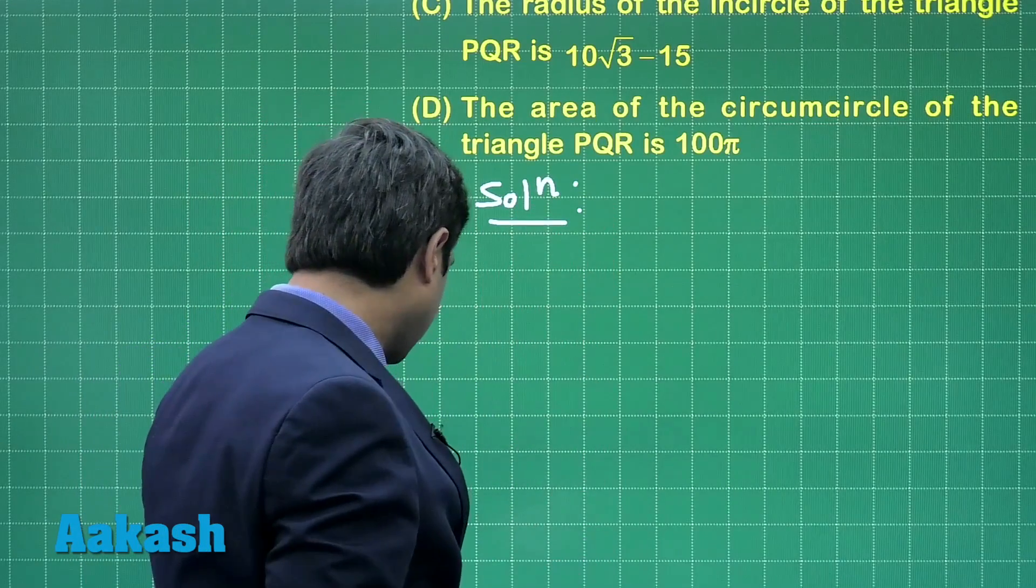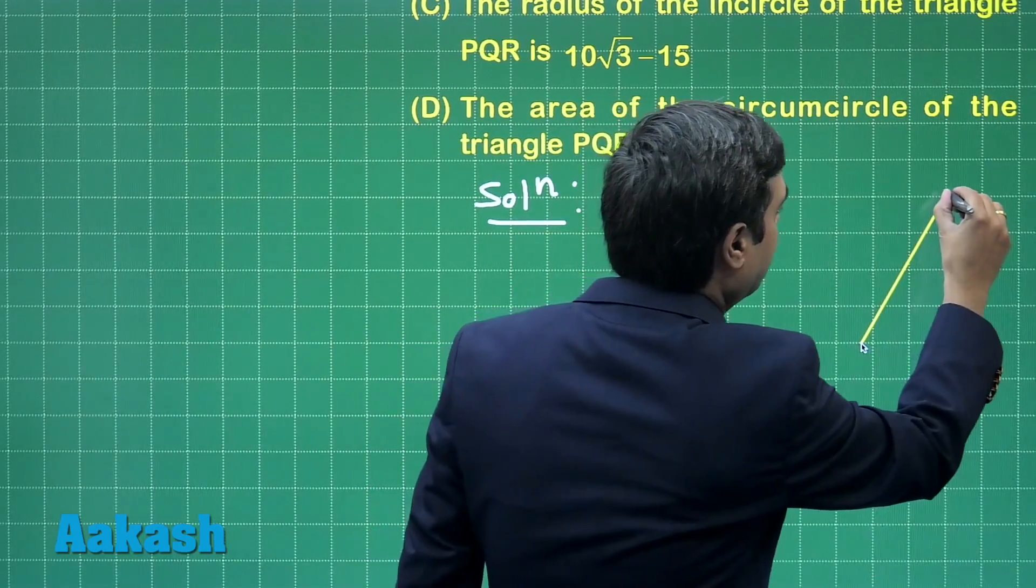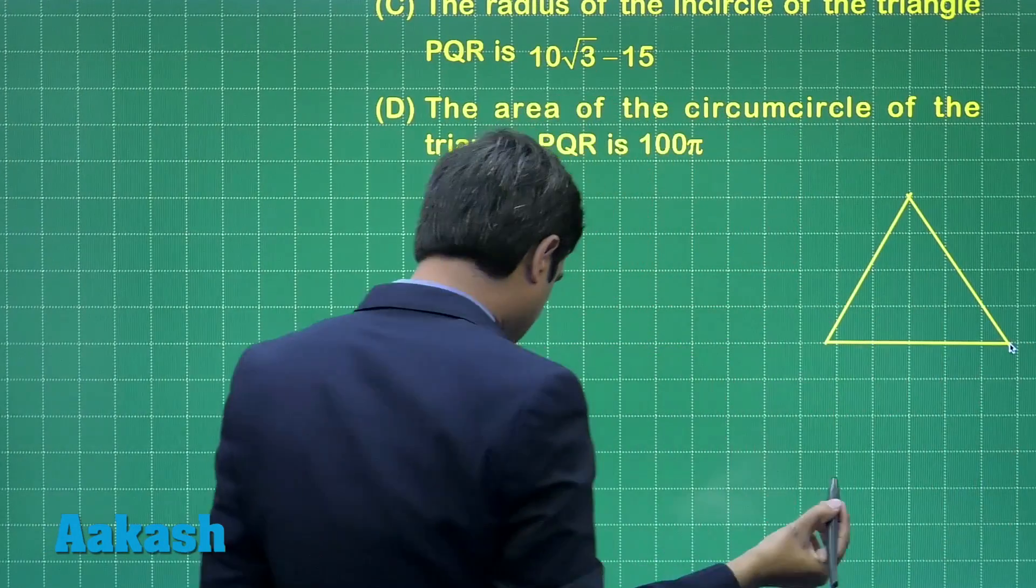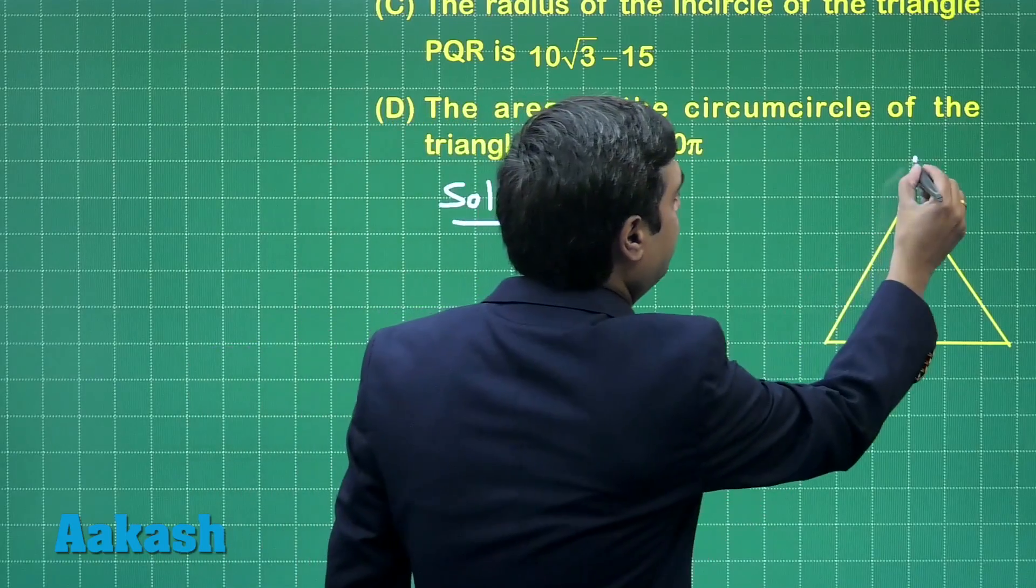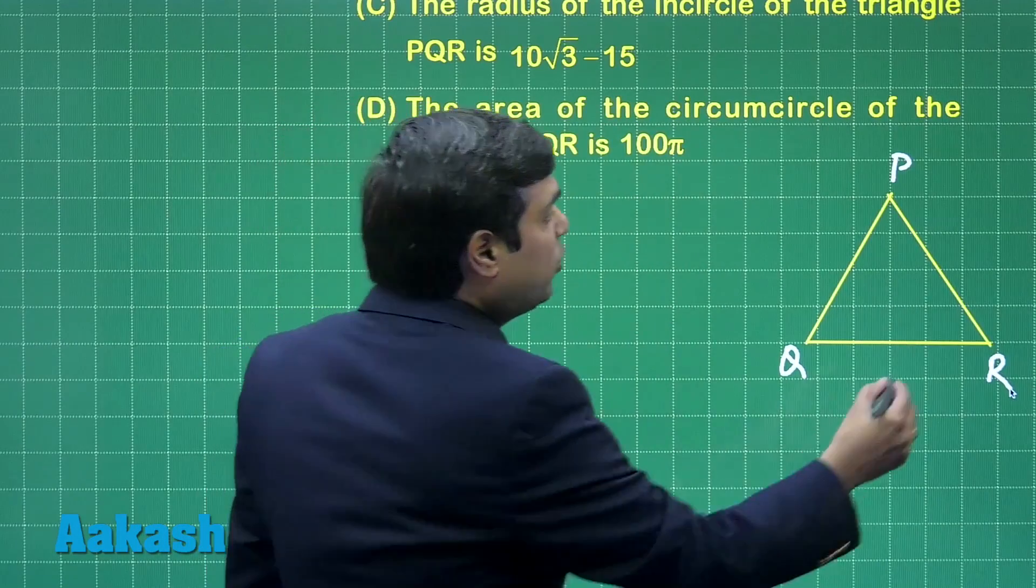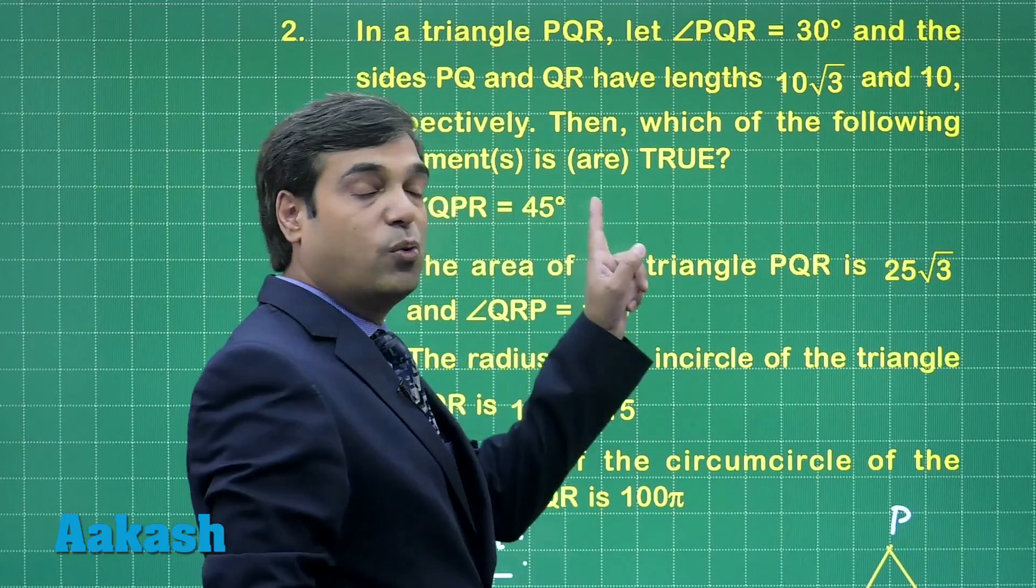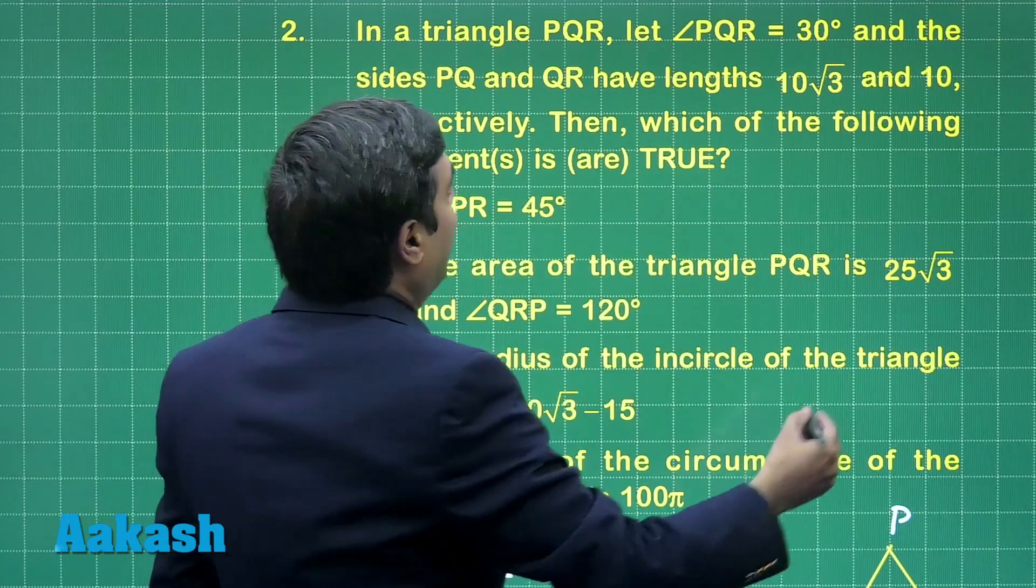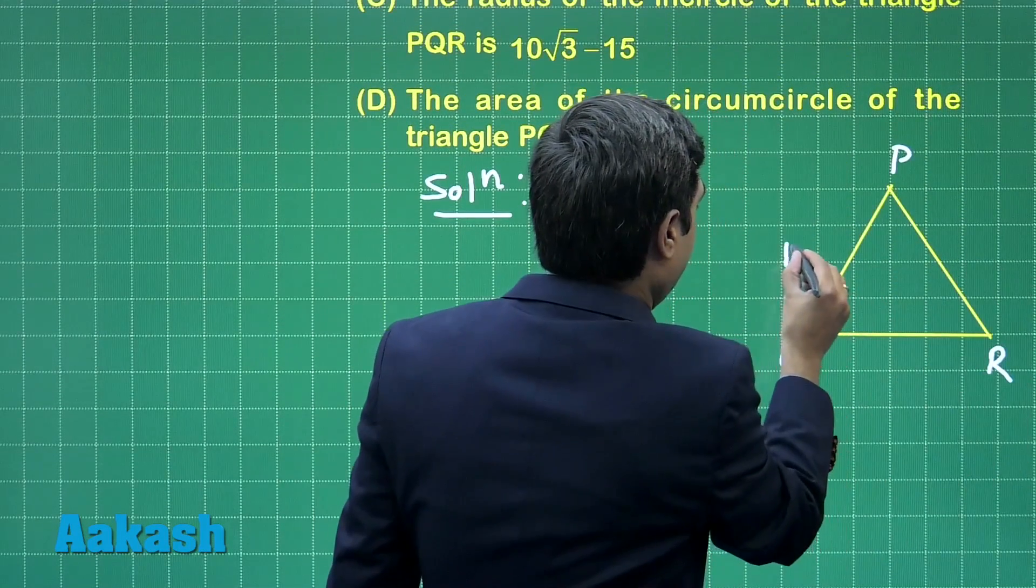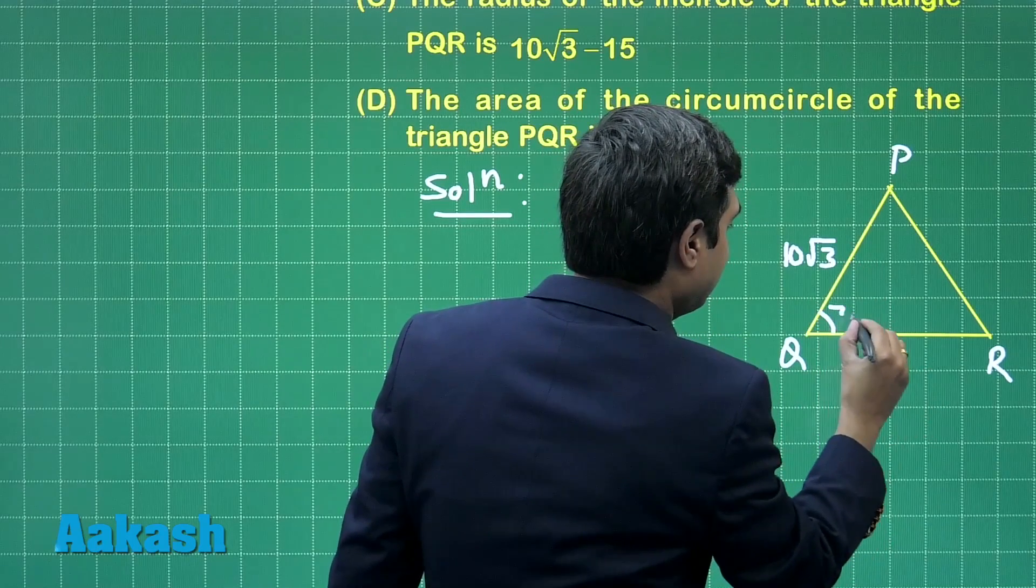This is given in this question as a triangle PQR is there, right. So marking these coordinates as PQR, let us say P here, Q here and R here. Given to me 2 sides as PQ and QR, 10 root 3 and 10 respectively, and angle PQR is 30 degrees. Meaning 10 root 3 and 10 while this angle is 30 degrees, correct.